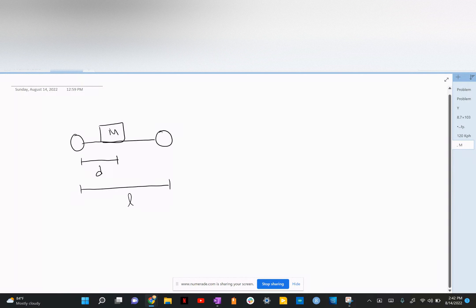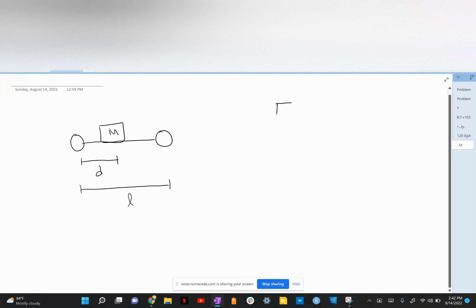We're given a bicycle rider with mass M. He sits at distance D from the rear wheel, and the distance between both wheels is L. Let's first start with the free body diagram.